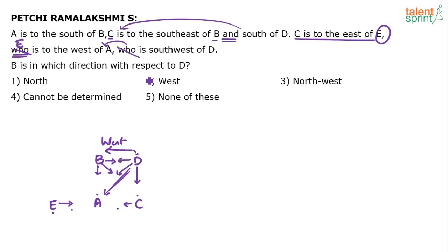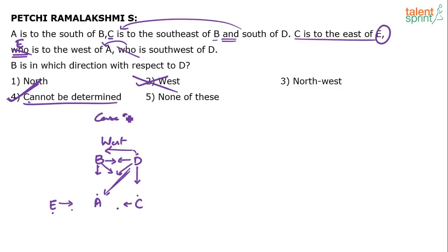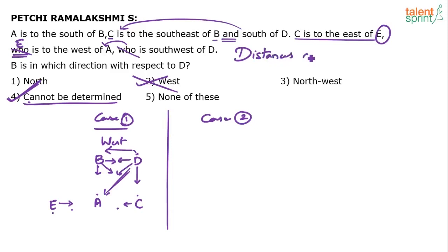West is absolutely wrong as an answer. You might be wondering why — we got west, so why is it wrong? The answer is: cannot be determined. You don't need all this work to realize that. If you understand the crux of this type of question, you'd mark 'cannot be determined' immediately. The reason is that distances are all unknown — we have no clue what any distance is.